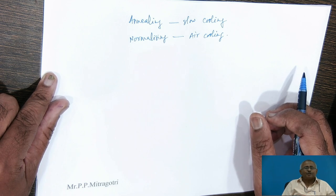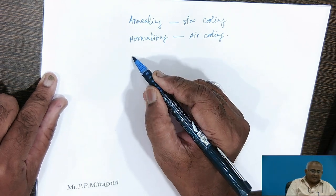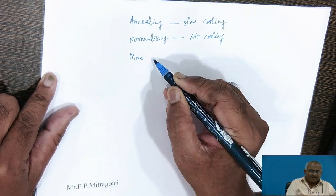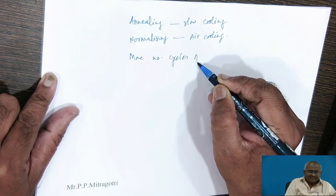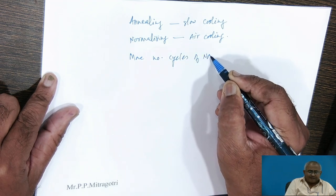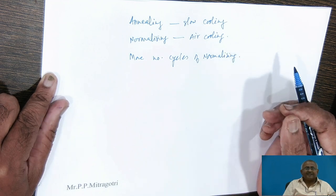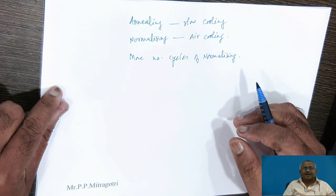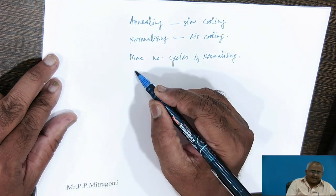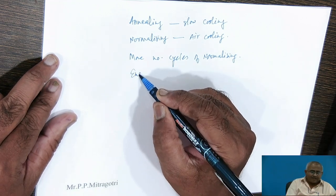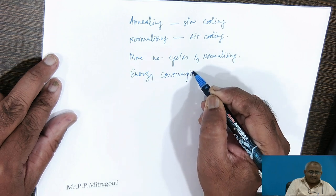In a given prescribed time we can carry out more number of cycles of normalizing than annealing. This is an advantage. Energy consumption in annealing is greater than that of normalizing — energy consumption of normalizing is lesser. This is another advantage of normalizing.